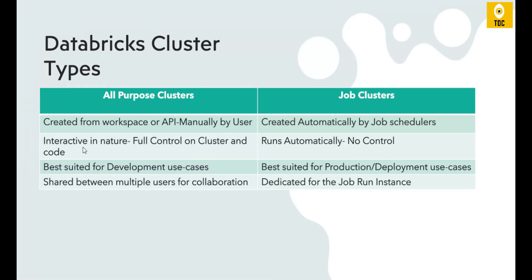By now you should understand that the All-Purpose Cluster is most suitable for development use cases where you are doing trial and error, adding code, practicing, or debugging. Once development is complete and you want to deploy code to a production-like environment, Job Clusters are more suitable. You can use All-Purpose Clusters for production as well, but Job Clusters save cost when your job is not running all day. Hope this was useful — thanks for watching.